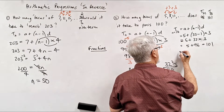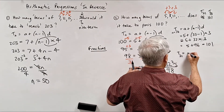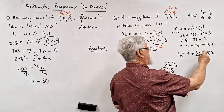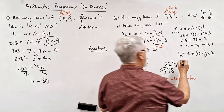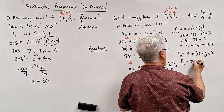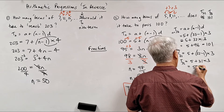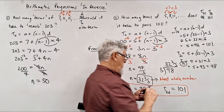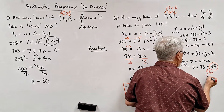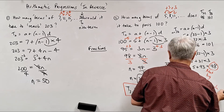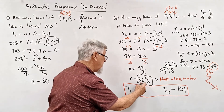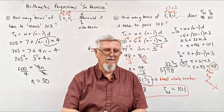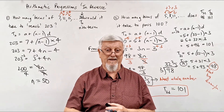You can also check the 32nd term: T_32 = 5 + (32 − 1) × 3 = 5 + 31 × 3 = 5 + 93 = 98. So term 32 is not big enough. When you get n = 32⅔, you automatically know the 32nd term won't be enough, so you need the 33rd term. I hope that helps — if you enjoyed this, please let your friends know, press like, and thanks for watching.